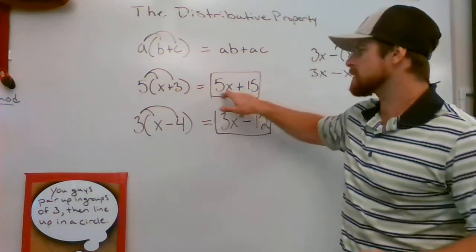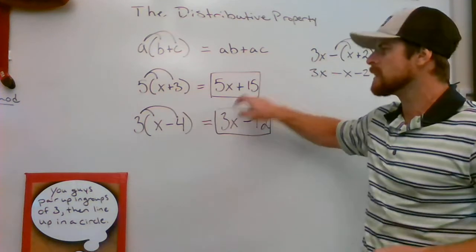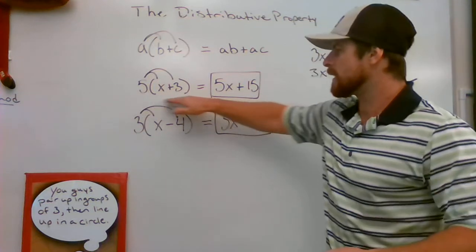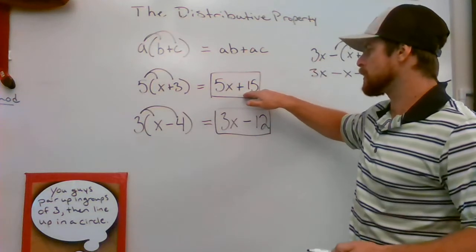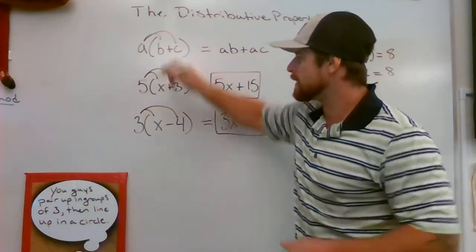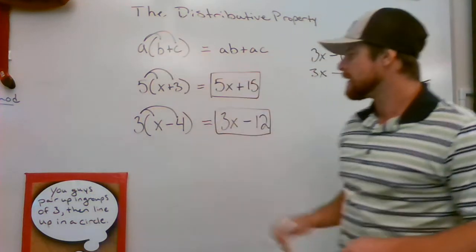5 times x makes 5x. 5 times 3 makes 15. Don't forget to do it to both of them. A lot of times I'll see a kid write down 5x plus 3. If you can figure out what they did there, they just forgot to multiply it by the second term. That's why these lines come in such handy.